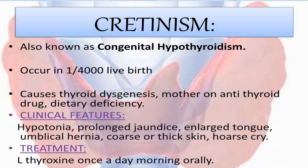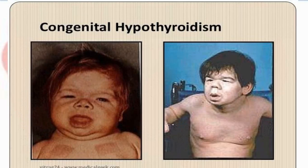Cretinism, also called congenital hypothyroidism, occurs due to thyroid dysgenesis in the newborn, or when the mother is on anti-thyroid drugs, or has severe iodine deficiency. Newborns present with hypotonia, prolonged jaundice, large tongue, umbilical hernia, coarse thick skin, and hoarse cry. They require levothyroxine once daily orally. As the child grows, mental retardation and stunted growth become apparent.